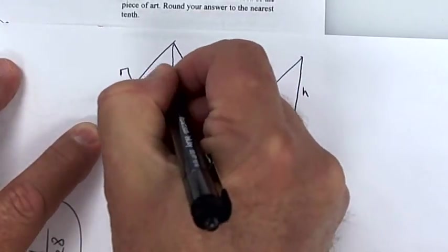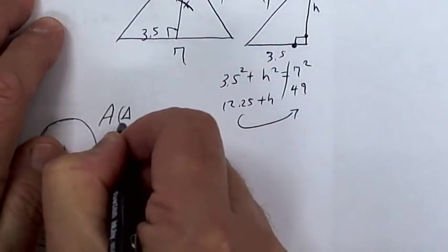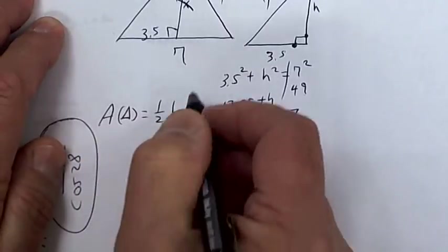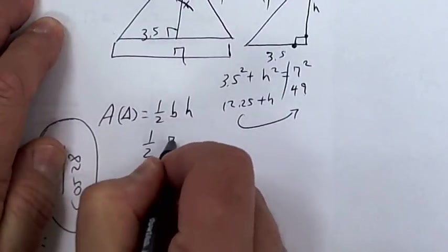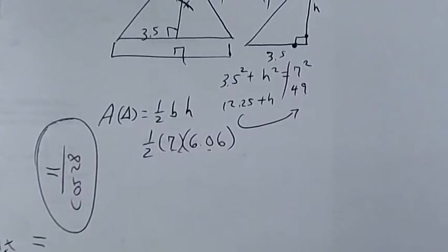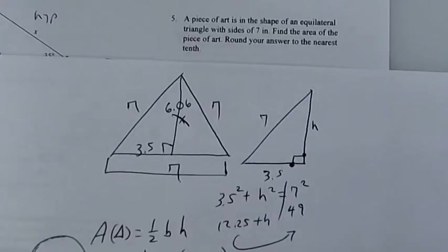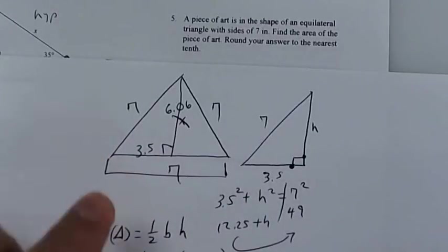So scratch that out and put 6.06. Now that I know the height, the area of a triangle is one-half the base times the height. The base is 7, so it's one-half times 7 times 6.06. Multiply those out — times 7 equals, divide by 2 equals — I get 21.2. So for number 5 they have 21.2. You draw an equilateral triangle, drop an altitude, use Pythagorean's theorem to find the height, and use the whole base when you plug it into the formula.